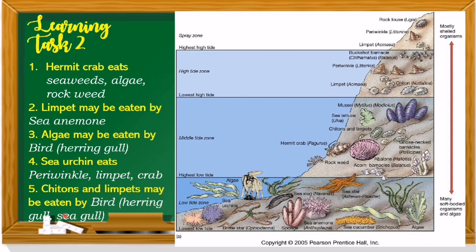For number 5, chitons and limpet may be eaten by the seagull because they are found on top, at the highest high tide part. Study the parts of this intertidal zone: high tide zone, lowest high tide, middle tide zone, highest low tide, and low tide zone. I have provided the colored picture so that you can understand it well.